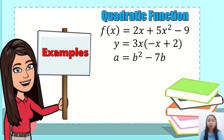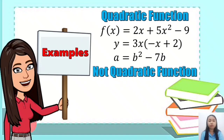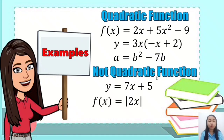The third example: a is equal to b squared minus 7b is still a quadratic function because the degree is 2. Though we are not using x and y, it's still a quadratic function because we have two variables — b as the independent variable and a as the dependent variable. Examples of non-quadratic functions: y is equal to 7x plus 5 (degree 1, linear), f of x is equal to the absolute value of 2x, and y is equal to 5x cubed minus 9 (degree 3).